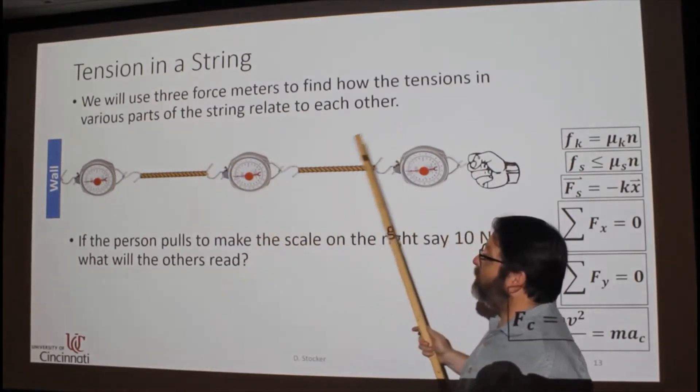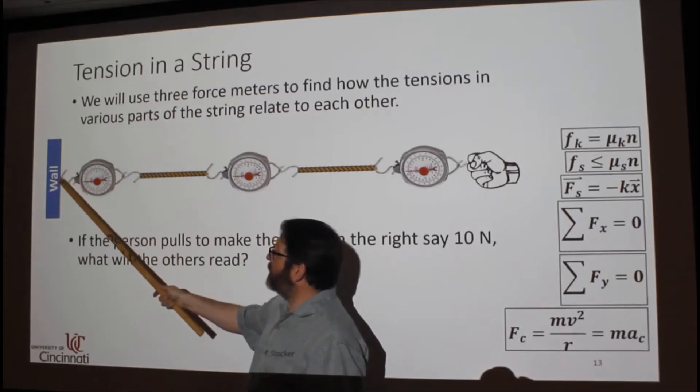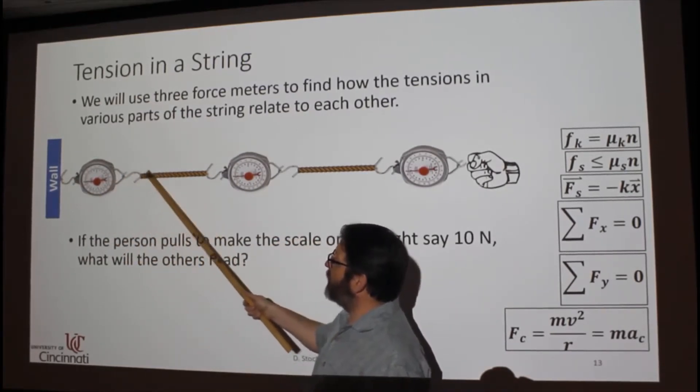So I've got three different force meters. Basically what these do, you hook something on one side, and then when you pull on the other, this tells you how hard you're pulling on it.